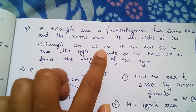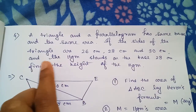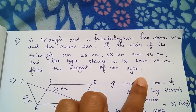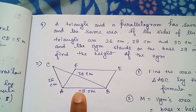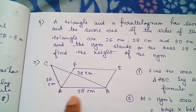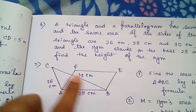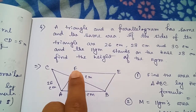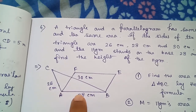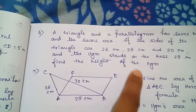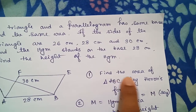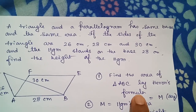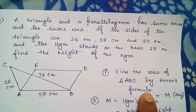The sides of the triangle are 26 cm, 28 cm, and 30 cm, and the parallelogram stands on the base of 28 cm. Find the height of the parallelogram. I have drawn the triangle as ABC and the parallelogram as ABEF. Since we know all three sides of the triangle, the first thing to do is find the area of triangle ABC by Heron's formula.